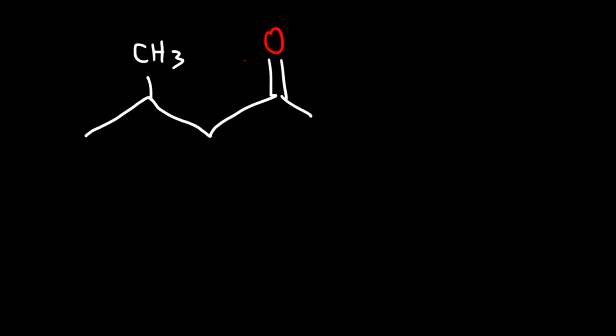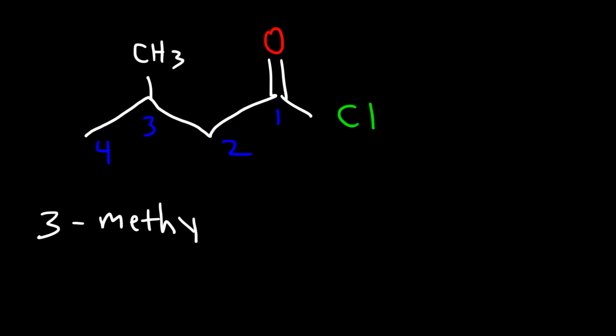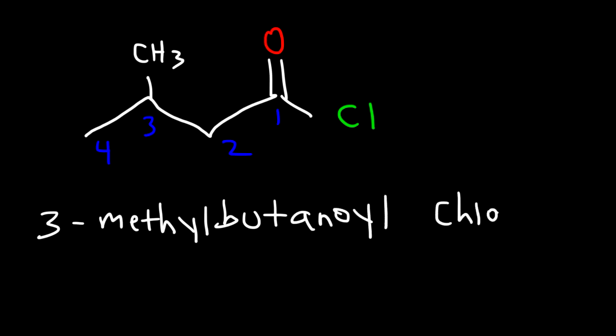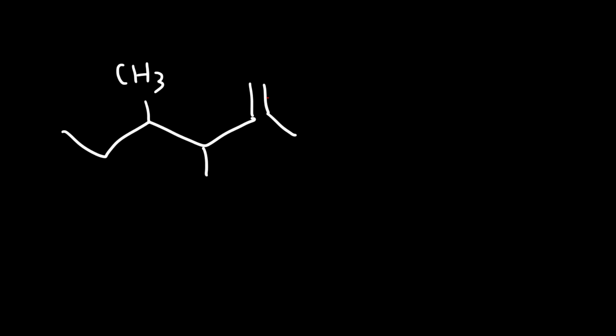This time we're going to have an acid chloride. Go ahead and pause the video and name this molecule. We have a methyl group on carbon 3, so this is going to be called 3-methyl, and we have a four-carbon chain, so instead of butane it's going to be butanoyl chloride: 3-methylbutanoyl chloride. Here's a similar example you could try.